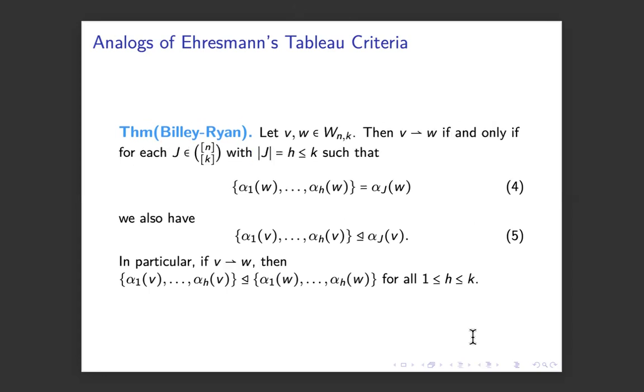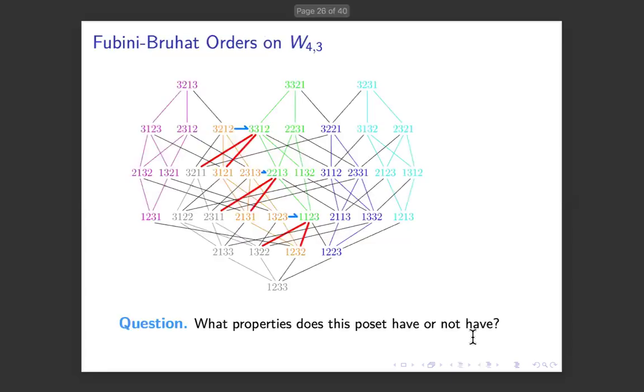So this characterizes the medium roast, and we can also use it to characterize the cover, not the covering relations, but these generating relations in the espresso roast, which contain more than covering relations. So here's a picture of what these three partial orders look like.